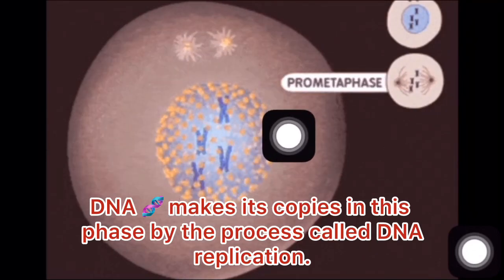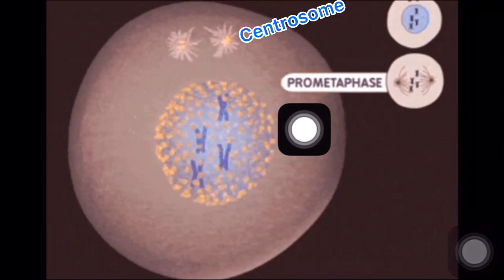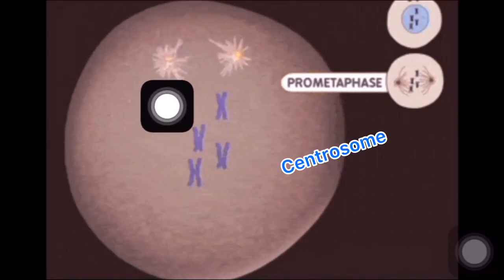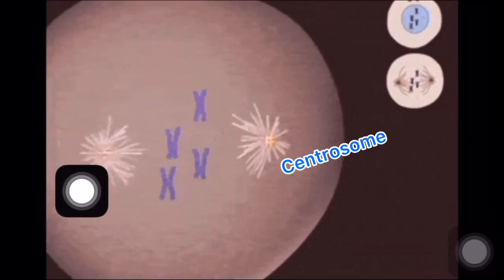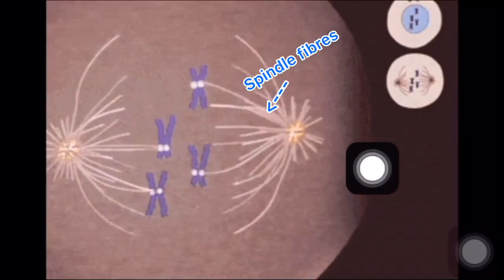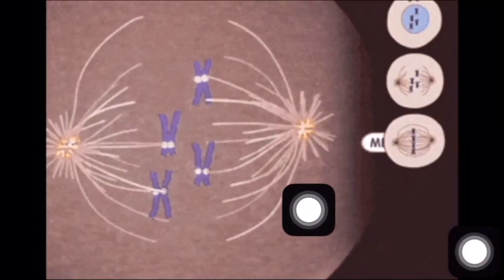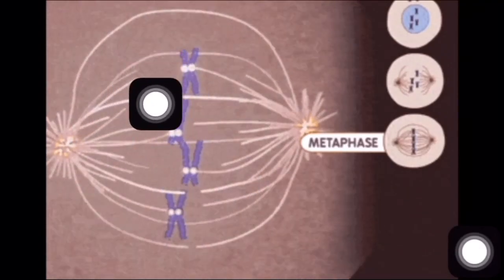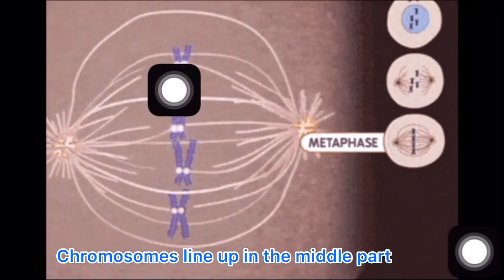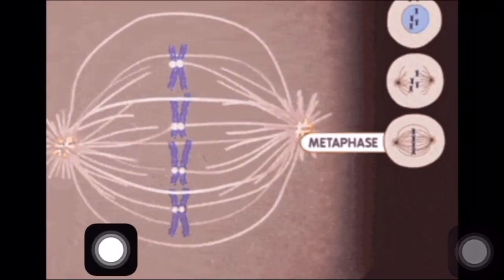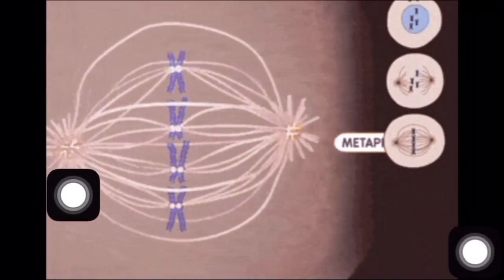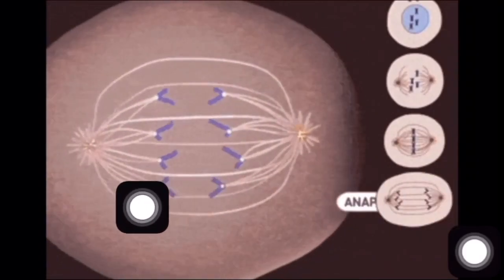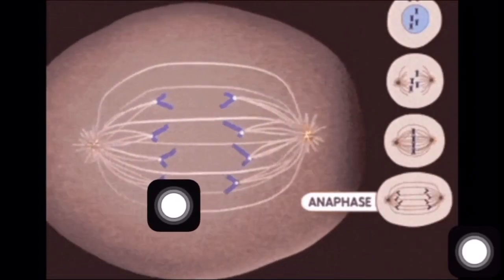In this case, the centriole goes to opposite side and then metaphase starts. You can remember it as middle, because in this phase the chromosomes become lined up in the middle of the cell. And the spindle fiber of centrosome get attached to the chromosome. And after a few time, the chromosome split up and they go away from each other.